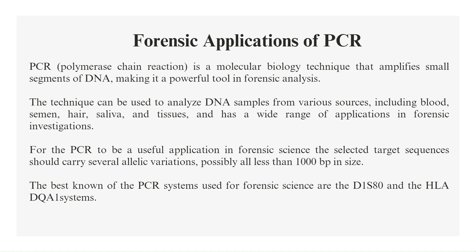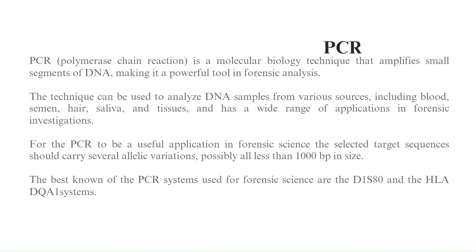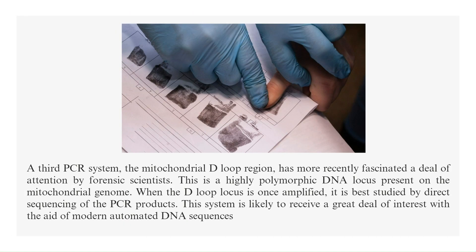The best known PCR systems used for forensic science are the D1S80 and the HLA-DQA1 systems. A third PCR system, the mitochondrial D-loop region, has more recently attracted a great deal of attention from forensic scientists. This is a highly polymorphic DNA locus present on the mitochondrial genome. When the D-loop locus is amplified, it is best studied by direct sequencing of the PCR products. This system is likely to receive great interest with the aid of modern automated DNA sequencers.